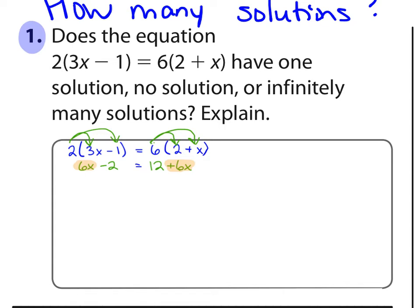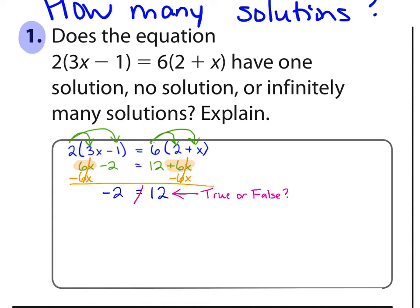Usually we get rid of one of those terms by doing the opposite. This is positive 6X, so we'll subtract 6X from both sides. Since these were the same terms, they cancel on both sides — 6X minus 6X gives 0X, there are no X's left. So we have negative 2 equal 12 remaining. We've got to think: is that true or false? Negative 2 is not equal to 12, so it's false. There is no solution to this equation.